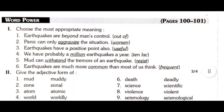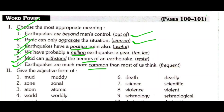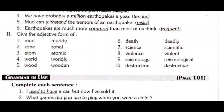Word Power: Choose the most appropriate meaning. 'Earthquakes are beyond man's control' — 'beyond' means 'out of.' 'Panic can only aggravate the situation' — 'aggravate' means to make worse. 'The earthquakes have a positive point also' — 'probably a million earthquakes a year' means about 10 lakh. A building that can 'withstand' the tremors of an earthquake. 'Earthquakes are much more common than most of us think.'